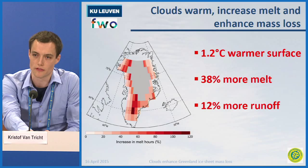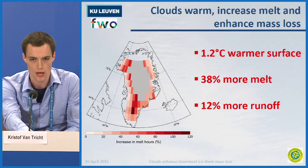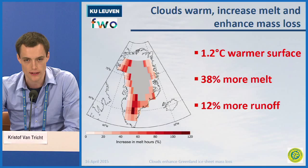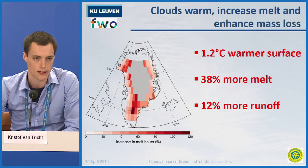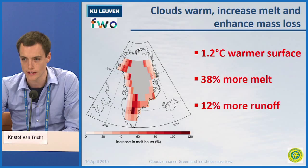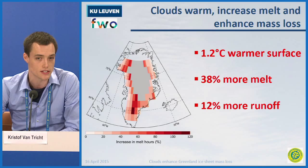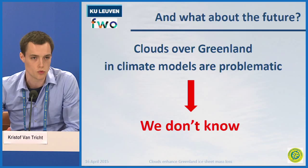We cannot use observations to look into the future, so we need climate models for that. The problem is we have looked at how state-of-the-art climate models simulate clouds over the Greenland ice sheet and compared that to our satellite observations. This is really problematic. Some models have too many clouds, too few clouds, too much liquid, not enough liquid. Even state-of-the-art models are really struggling with getting Greenland ice sheet clouds right, which questions the reliability of future projections of the future Greenland ice sheet and the subsequent global sea level rise implications. We just don't know what will happen in the future as long as we don't have improved cloud representations in the models.